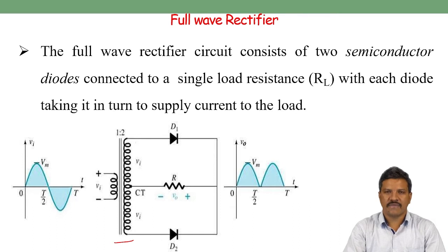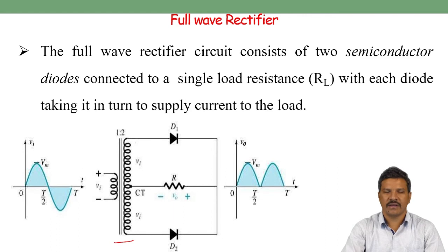What is the purpose of the center tap transformer? We know that in the power supply block diagram, the first block is the power center transformer, then rectifier, then filters and regulators. The first block is the transformer. In this case we have used a step-down transformer. So what is the difference between a step-down transformer and a center tap transformer?